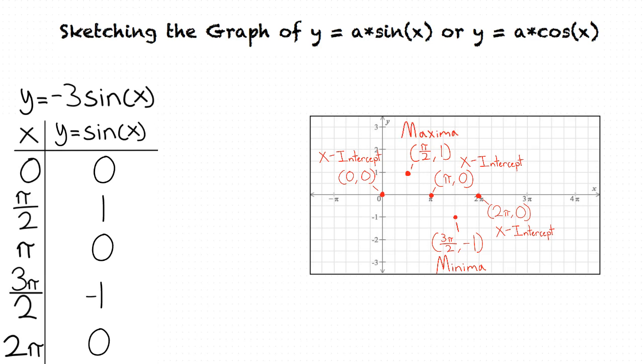Our sine equation does still follow a cycle, with one cycle equaling a unit of two pi. This means that a graph from x equals zero to x equals two pi will be the same as a graph from x equals two pi to x equals four pi.